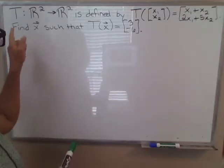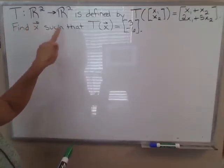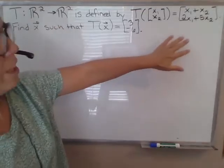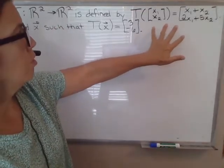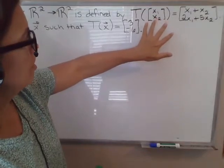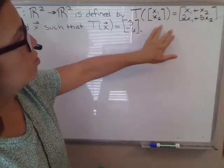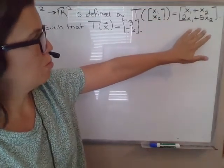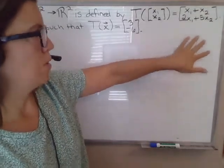In this example, T is a transformation from R² to R² that's defined by this equation over here. So T of this two-dimensional vector x1, x2 is equal to x1 plus x2, 2x1 plus 5x2.